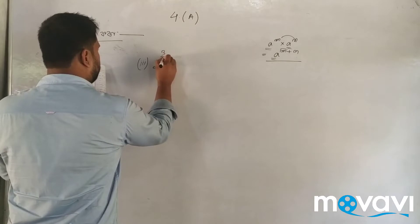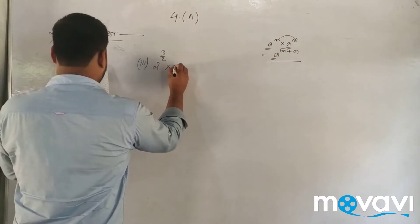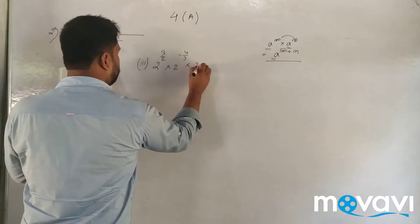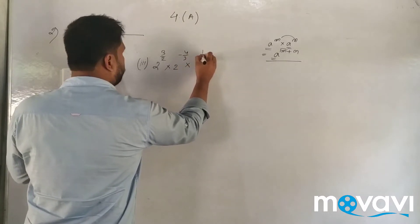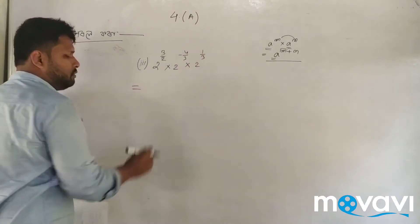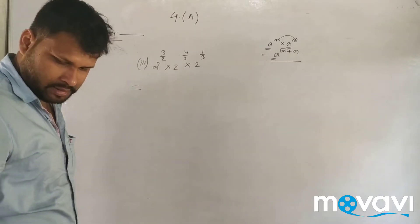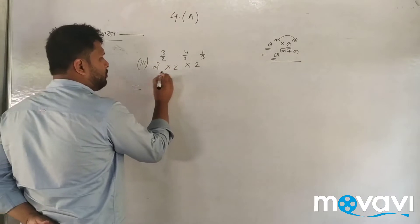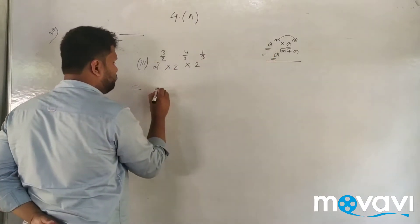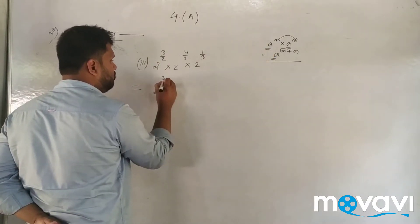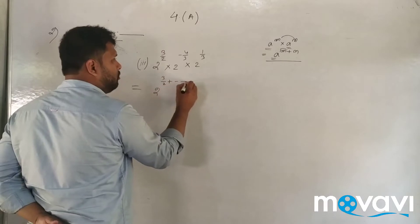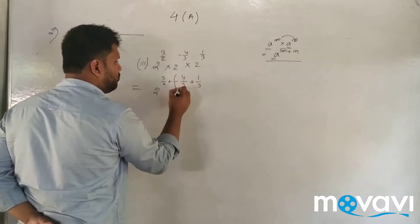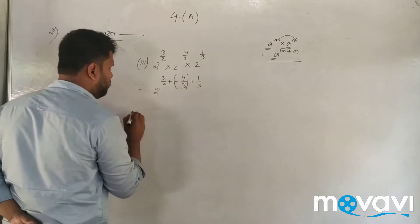Next: 2 to the power 3 by 2, into 2 to the power minus 4 by 3, into 2 to the power 1 by 3. This is the same base number, so we apply the formula and add the exponents: 3 by 2 plus minus 4 by 3 plus 1 by 3.